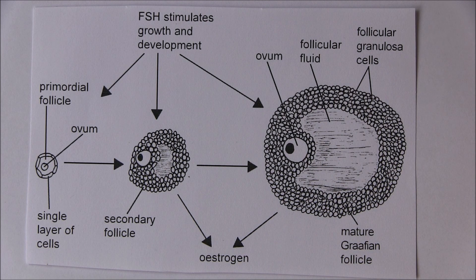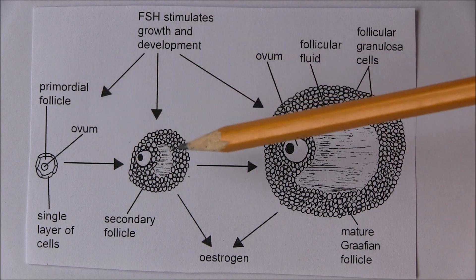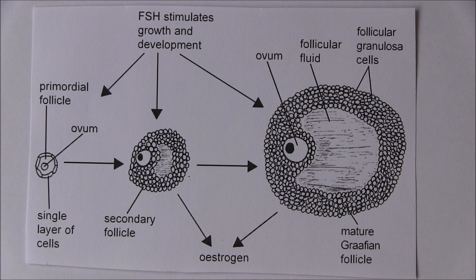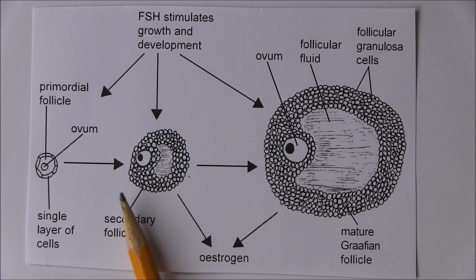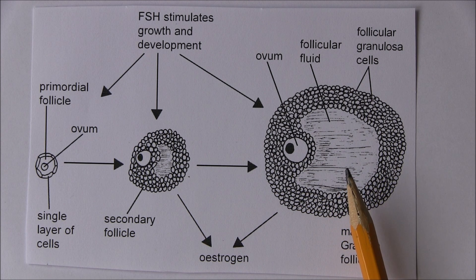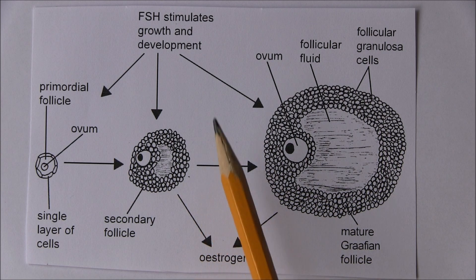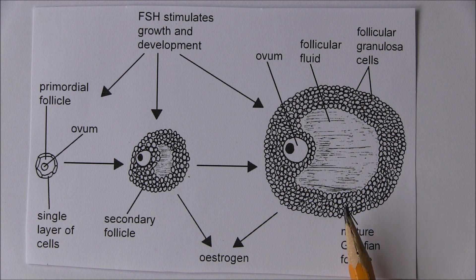Getting back to puberty, follicle-stimulating hormone causes the development of primary follicles into secondary and then mature follicles. FSH means there are probably a few developing at any one time in the ovaries, and they can take several months to develop. By about day six of the menstrual cycle, one follicle becomes dominant, and estrogen secreted by that dominant follicle inhibits the release of FSH from the anterior pituitary, removing the stimulus to less well-developed follicles.